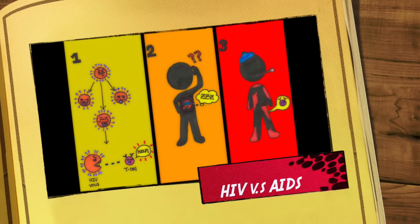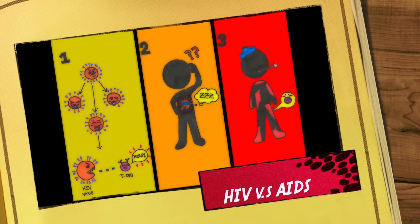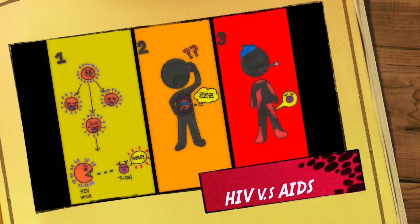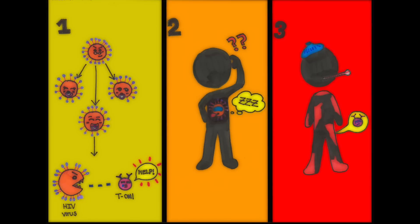Many people use HIV and AIDS synonymously. So what is the difference between HIV and AIDS? Think of it as cause and effect — HIV is the cause and AIDS is the effect. There are three stages of HIV infection. AIDS represents the last stage of HIV infection, when the immune system is severely weakened and the body becomes particularly susceptible to opportunistic infections.